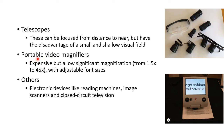The next type is portable video magnifiers. This picture shows a portable video magnifier. They are expensive but allow significant magnification from 1.5x to 45x with adjustable font sizes. Other examples of low vision aids include electronic devices like reading machines, image scanners, and closed-circuit television.